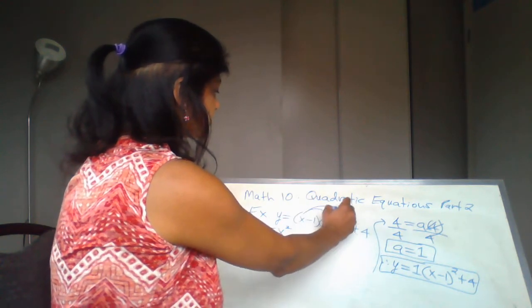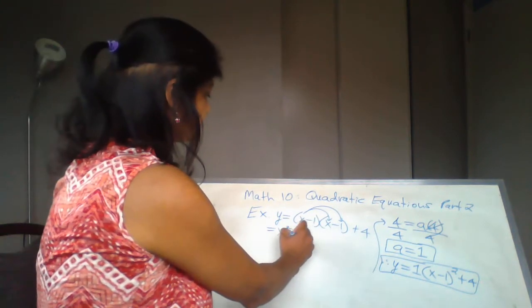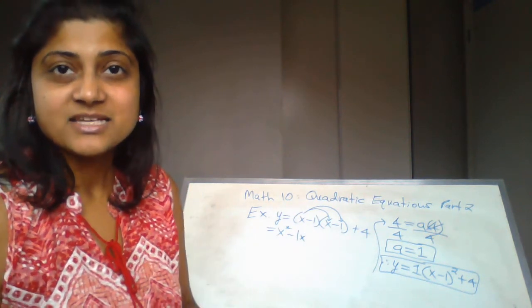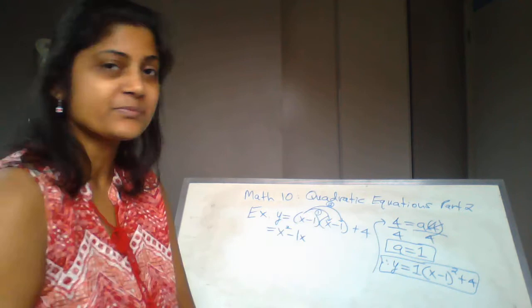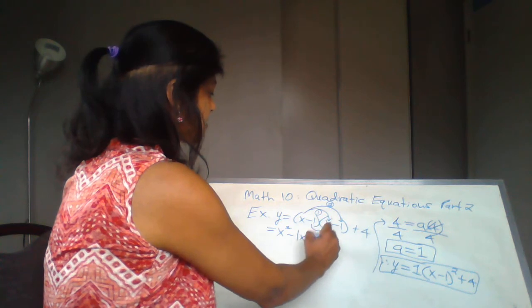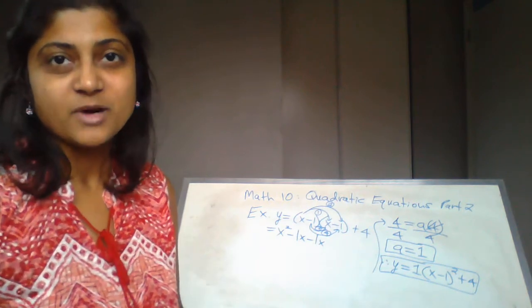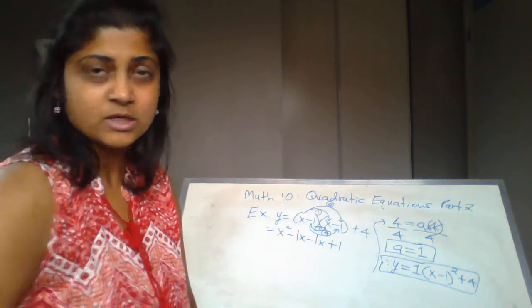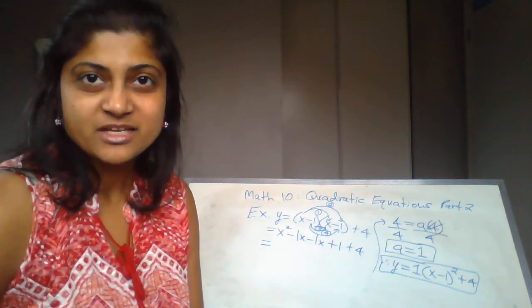We're going to use the FOIL method to open up the brackets. x times x gives x². Then x times negative 1 gives negative 1x. Make sure when you do the FOIL method you're doing it in the exact same order — first the first two terms, then the inside two terms.